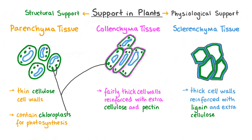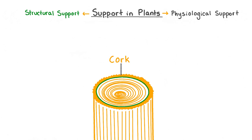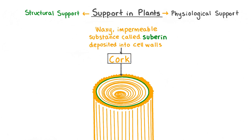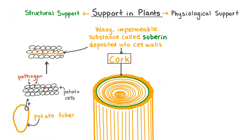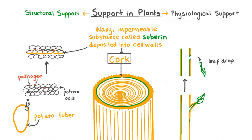Let's look at a final structural support mechanism in plants. Some plants have a cork layer surrounding organs like the stem, as seen on the bark of a mature tree. Cork is formed by the deposition of a waxy impermeable substance called suberin into its cell walls. In some cells, like those of a potato tuber, an infection by a pathogen can cause cork to form, with suberin deposited into the cell walls to protect the innermost cells. When certain trees begin to lose their leaves in preparation for winter, a scar of cork usually forms over this vulnerable region, forming a protective layer that prevents pathogen entry. Cork is impermeable to water, providing support against water loss and pathogen entry.